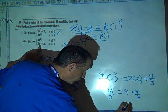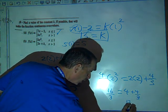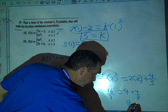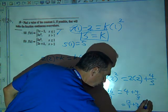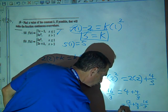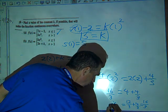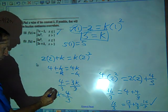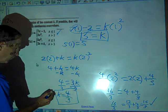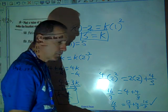Will be 4 plus 4 thirds, and this 4 is 12 thirds, right? 12 plus 4 equals 16 thirds, so that's 16 thirds also. So that checks, and so therefore we found the value of k.